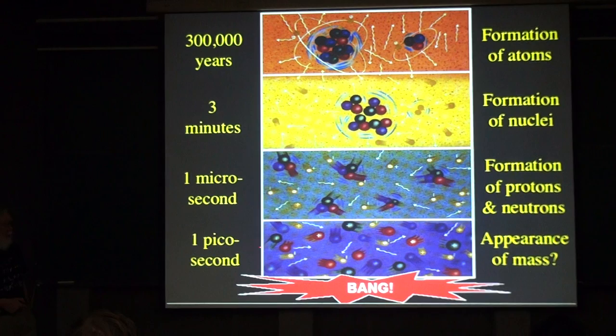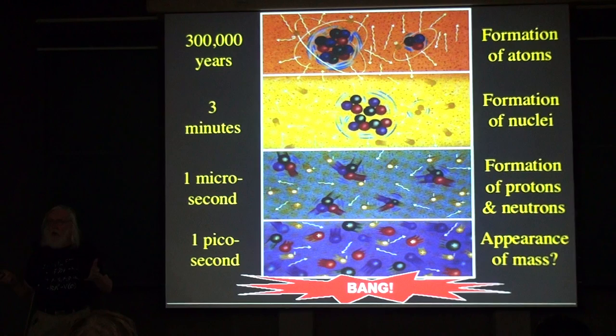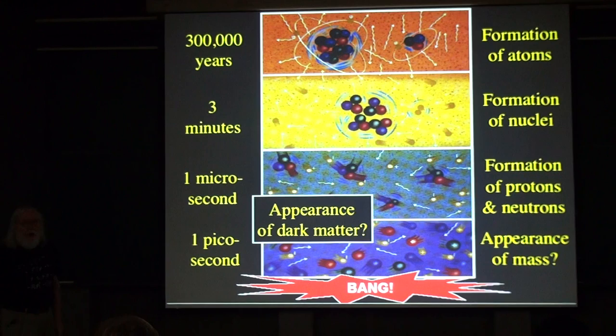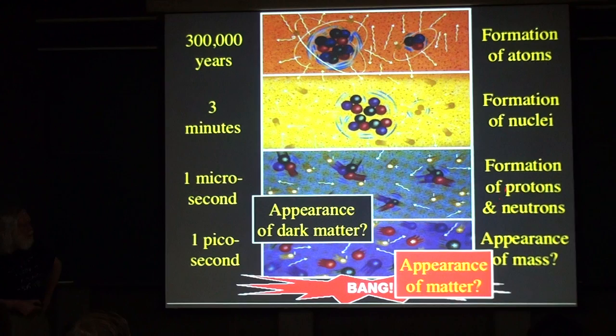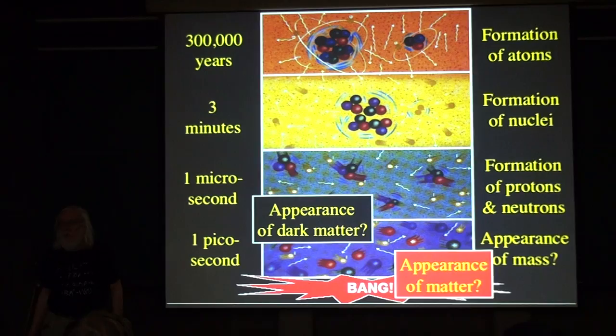When the universe was less than one picosecond old, particles didn't have any mass. Thinking back to the snow analogy, when the universe was less than a picosecond old it was too hot for the snow field to settle, so there was no universal snow field giving mass to particles. Dark matter perhaps appeared sometime between an age of one microsecond and one picosecond. The matter-antimatter difference was maybe imprinted when the universe was about one picosecond old.